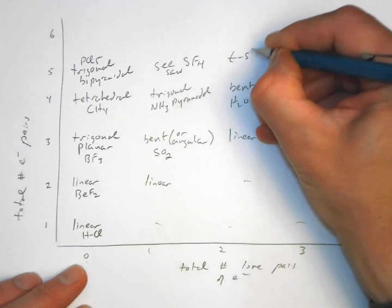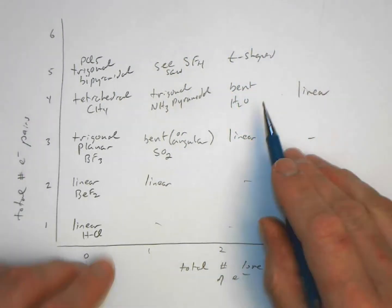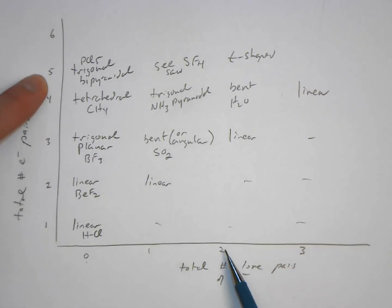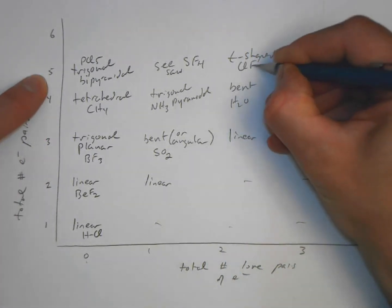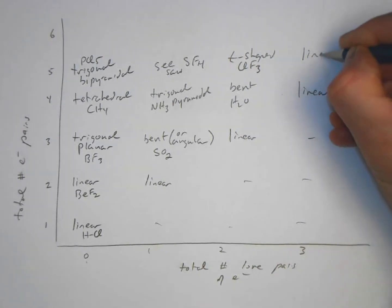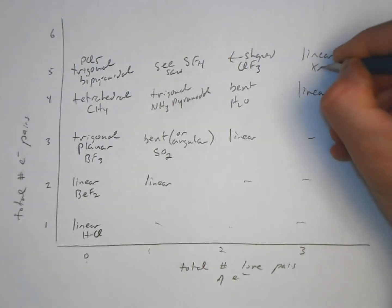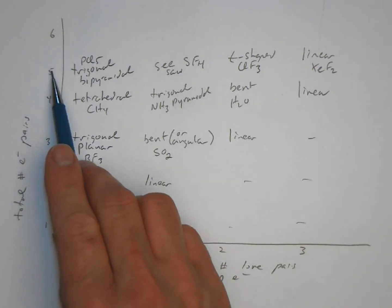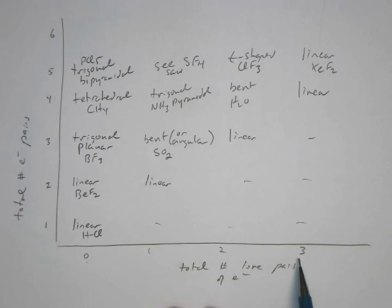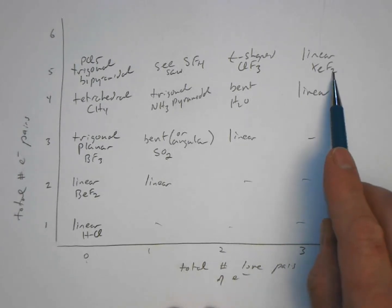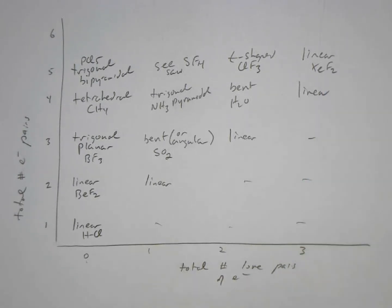A T-shaped structure occurs where we have five pairs of electrons and two of them are lone pairs, such as you would see in ClF3. And a linear molecule, such as XeF2, has five pairs of electrons around the xenon, three of them are lone pairs and two are bonding pairs to the fluorines.